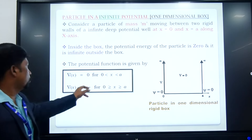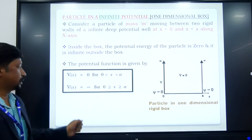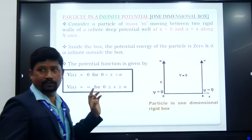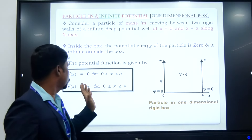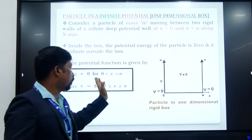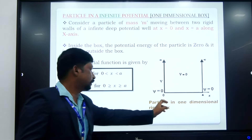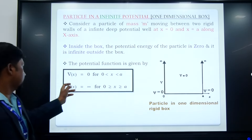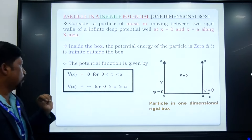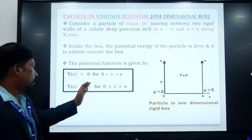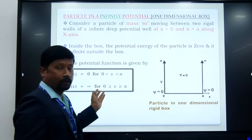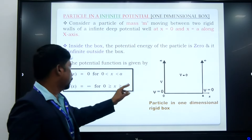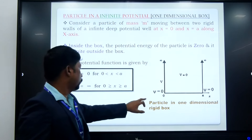From this, we frame two equations. V of x, that is, potential energy V(x) is equal to 0 for 0 less than x less than A. And another condition is V(x) is equal to infinity for x less than or equal to 0 or greater than or equal to A.